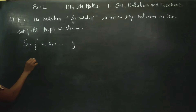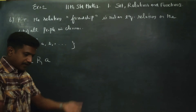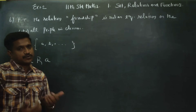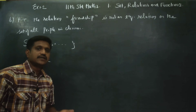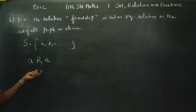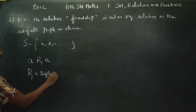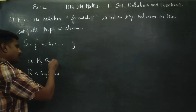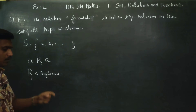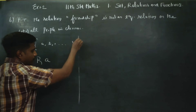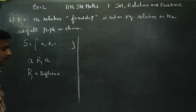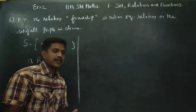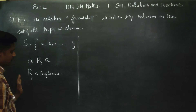First, check reflexive. A is a friend of A — one is the best friend of oneself. So A is a friend of A, B is a friend of B, C is a friend of C, and so on. Therefore, R is reflexive.